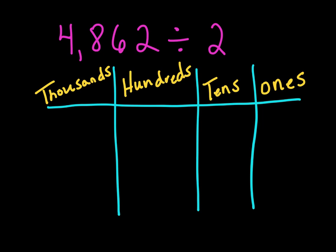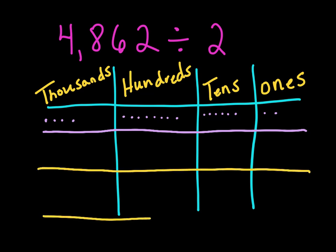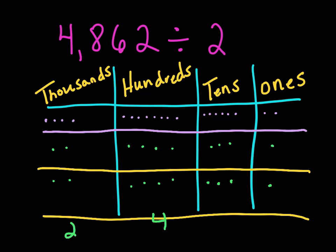4,862 divided by 2. We're going to break up 4,862 before we divide by 2. We've got 4 thousands, 8 hundreds, 6 tens, and 2 ones. If you look at those numbers, all of those digits are divisible by 2. So now let's separate them into two equal groups. Splitting up: 4 thousands gives 2 thousands; 8 hundreds gives 4 hundreds; 6 tens gives 3 tens; 2 ones gives 1 one. So we have 2,431 as our quotient.